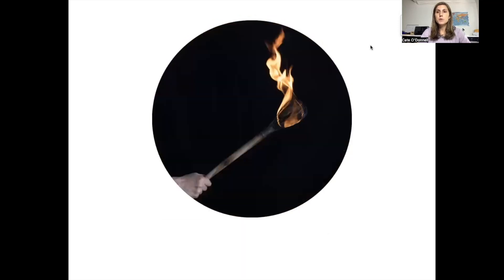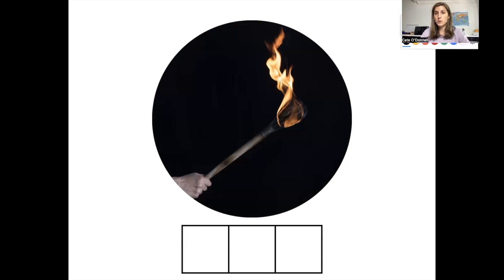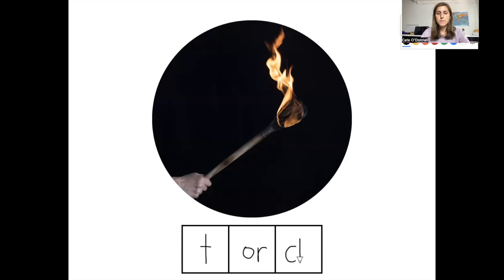Our last word today is torch. How many sounds do you hear in the word torch? There are three sounds in the word torch. The first sound is T — the letter T. The next sound is 'or,' spelled O-R. And the last sound is CH — the digraph C-H. This is how you spell torch.